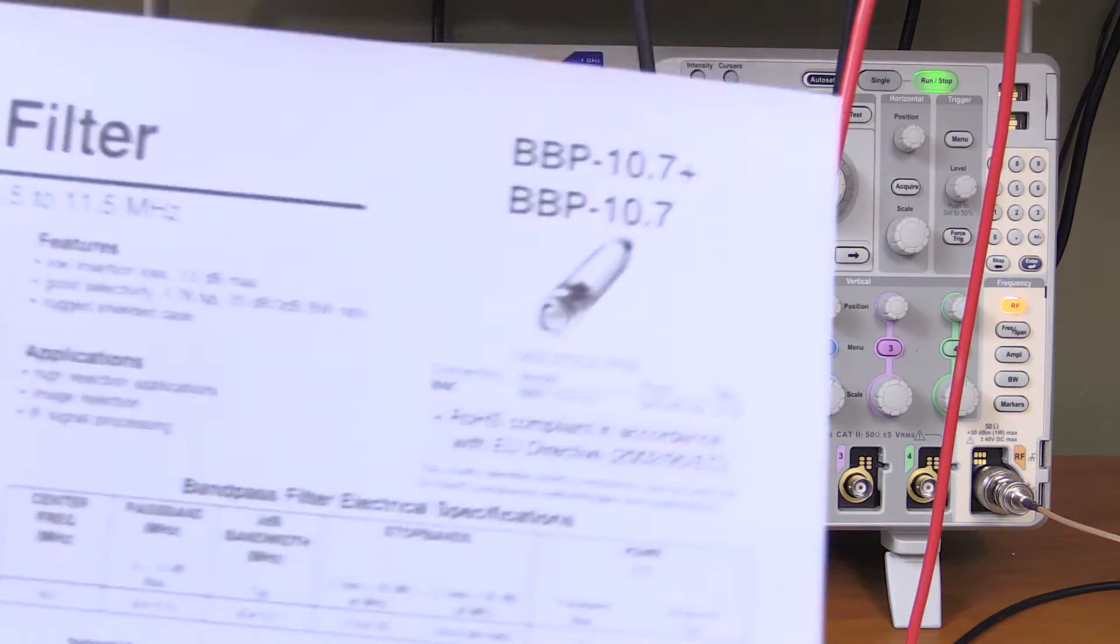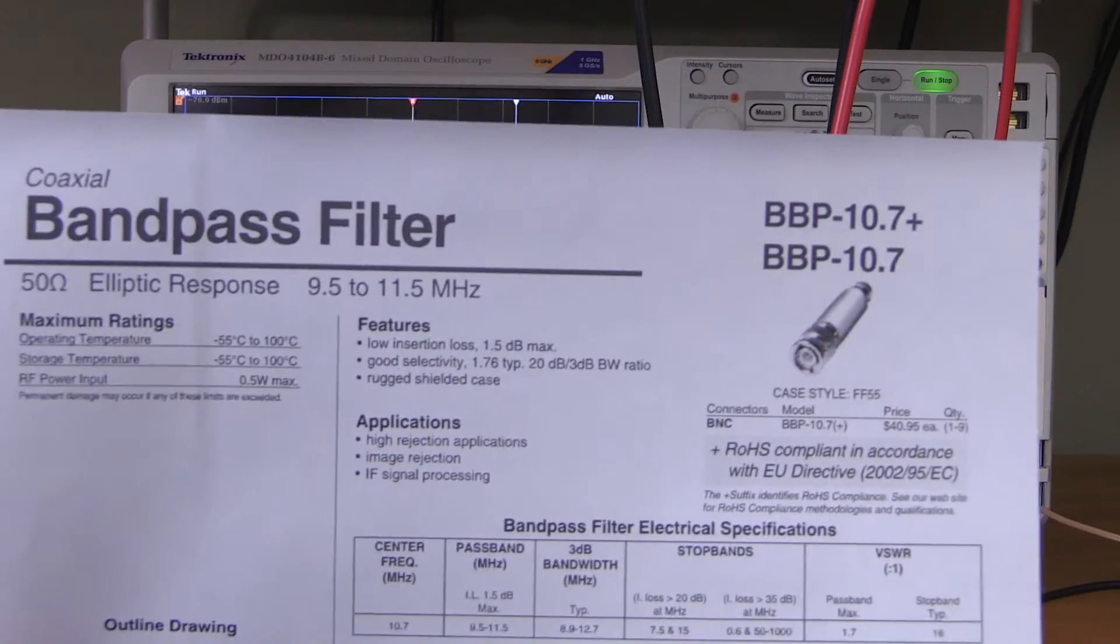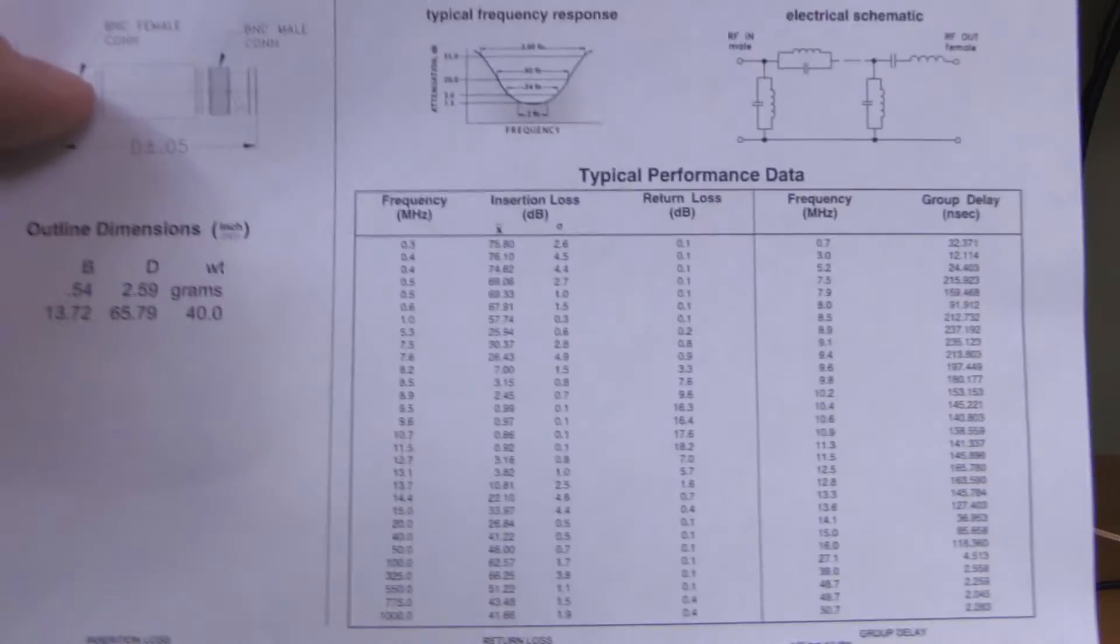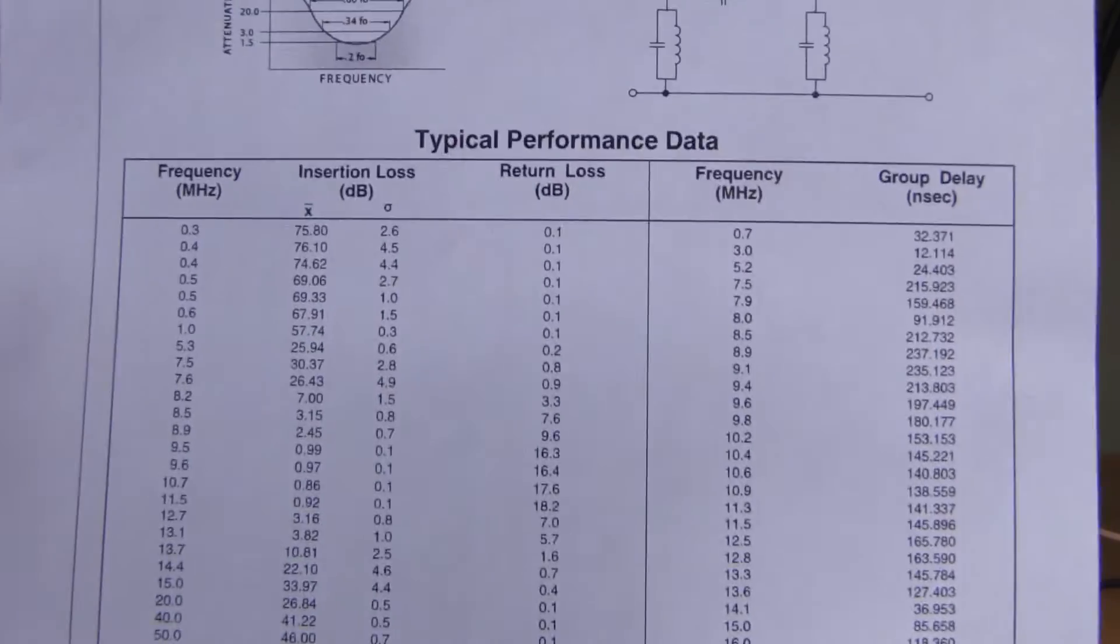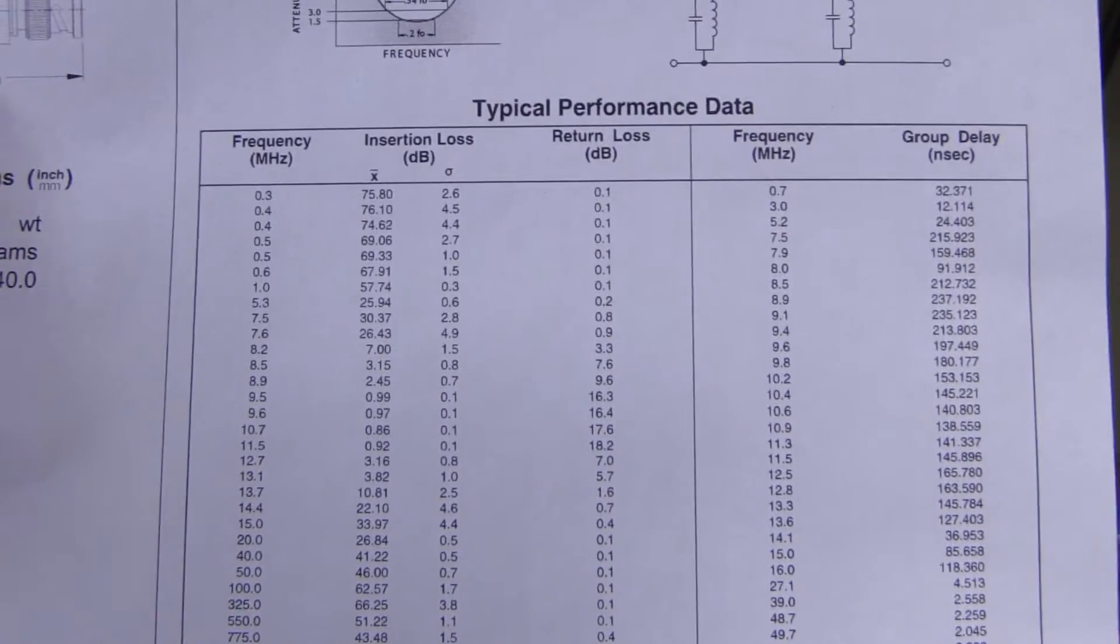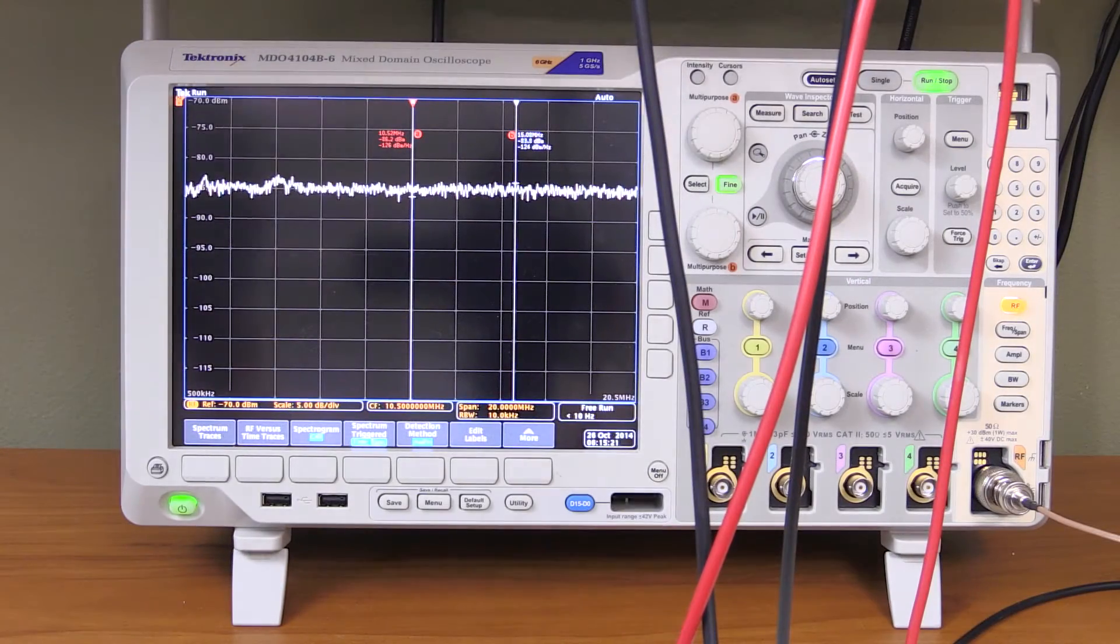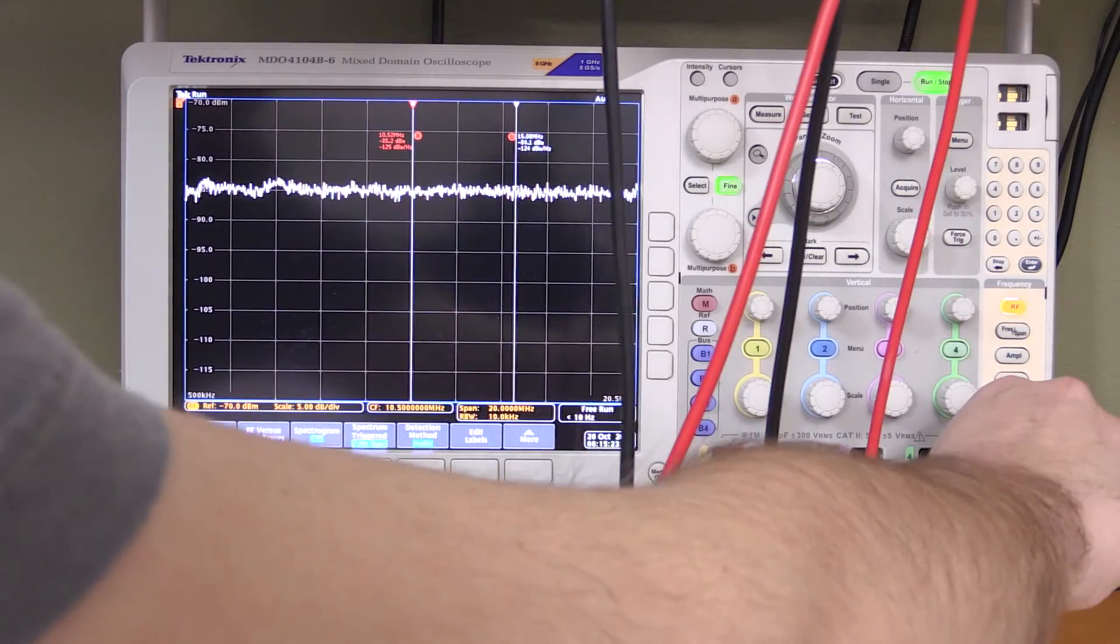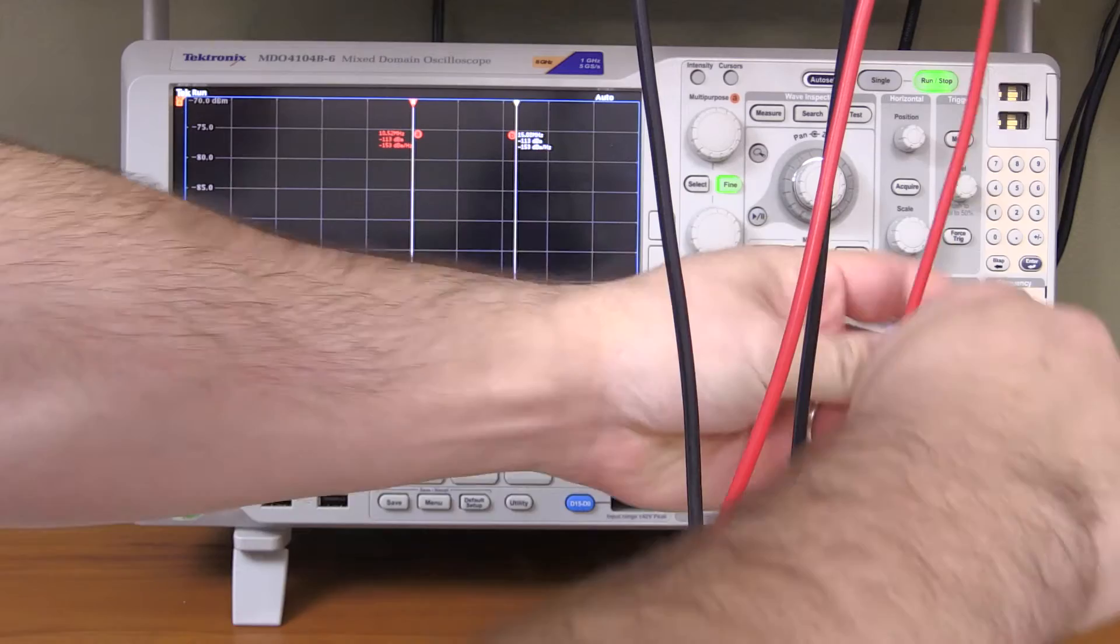But it doesn't seem like it. There we go. It's a MiniCircuit BBP-10.7. It's a bandpass filter for 10.7 MHz. 50 ohm impedance. And it mentions the passband here as 9.5 to 11.5 MHz. Although it appears in the datasheet that it is a little bit wider than that. So let me get the datasheet over here. Here we go. That's it. That's the bandpass filter. And we have a nice table here that actually shows us the return loss and insertion loss. But we don't want to trust the datasheet. We want to measure it on our own.